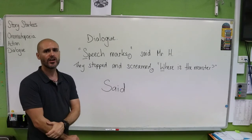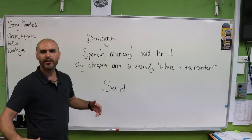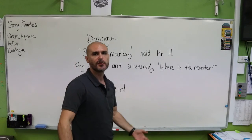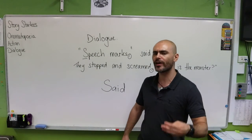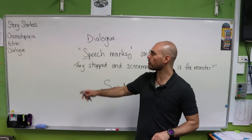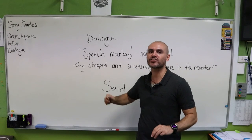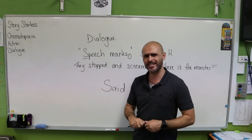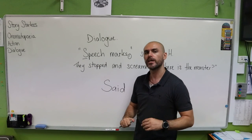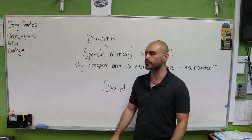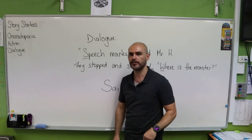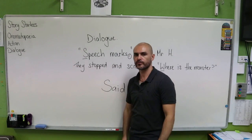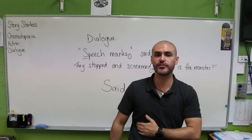Continuing with our stories, I would like you to show me how you can use dialogue in all of your stories. By now we should be making our way through our first three stories where we use onomatopoeia, action, and dialogue. Once you're finished with those story starts, I want you to come up with a whole new story and show me how you can use all three — onomatopoeia, action, and then dialogue. I can't wait to see what you've uploaded to your Google Classroom.